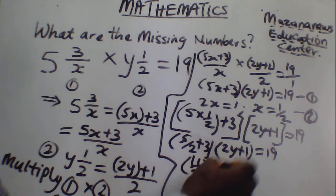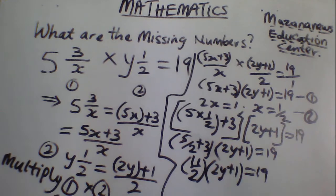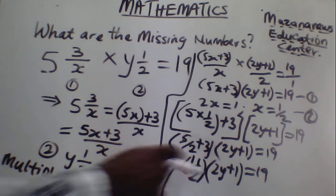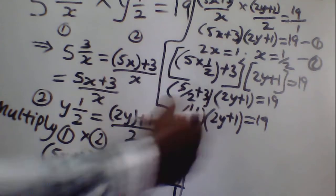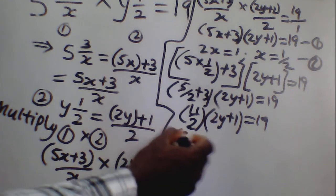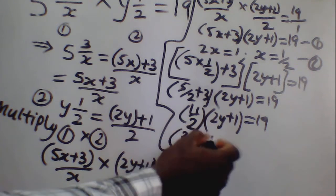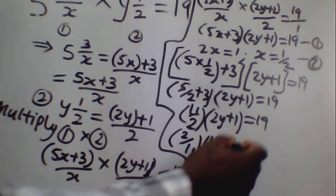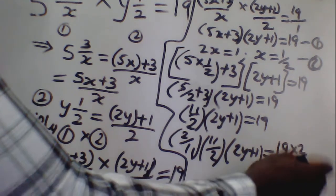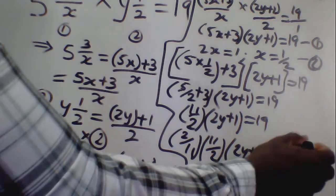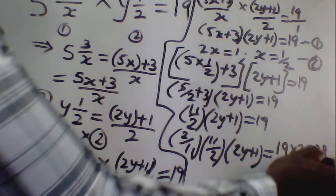And in brackets, 2y plus 1 is equal to 19. So here, if you multiply both sides by 2 over 11, that fraction will clear. We have 2 over 11 times 11 over 2, in bracket 2y plus 1, is equal to 19 times 2 over 11. So this gives us 38 over 11.